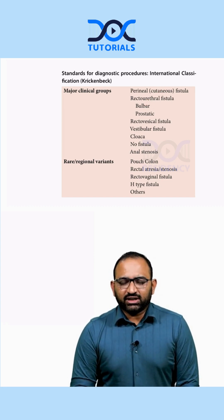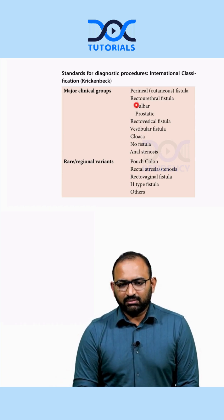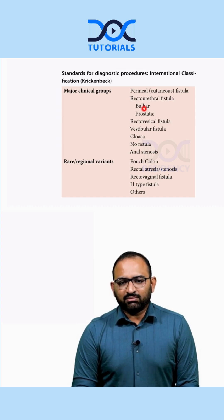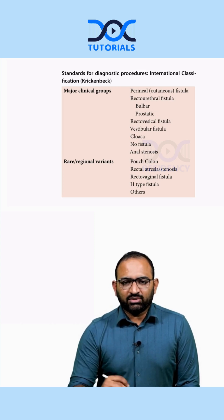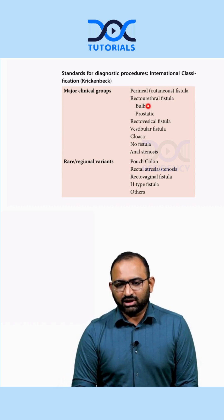Rectourethral fistula is where the rectum opens into the urethra through a small fistula. This is seen only in males, not in females. Types include bulbar urethra or prostatic urethra. Based on the location of the fistula, it is divided into bulbar and prostatic.